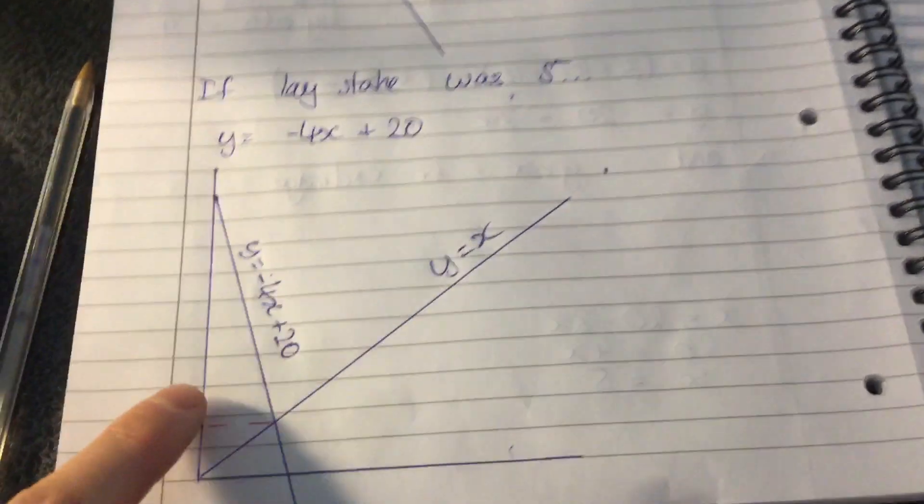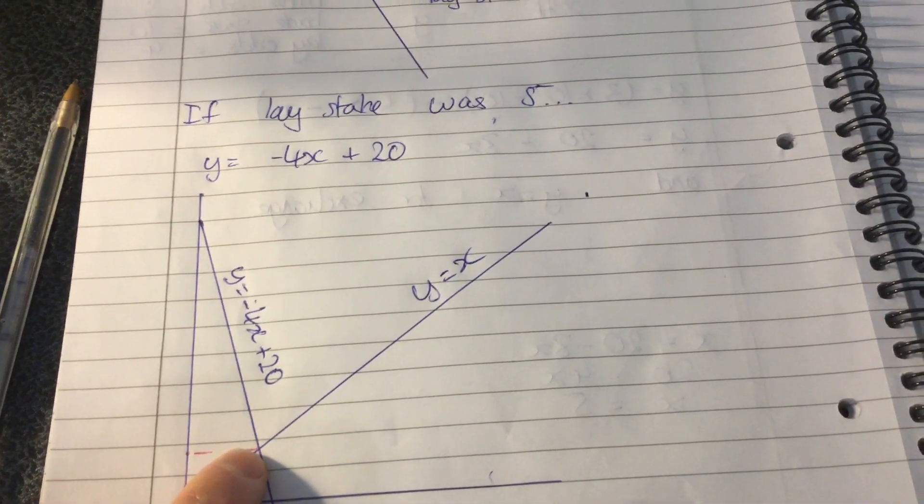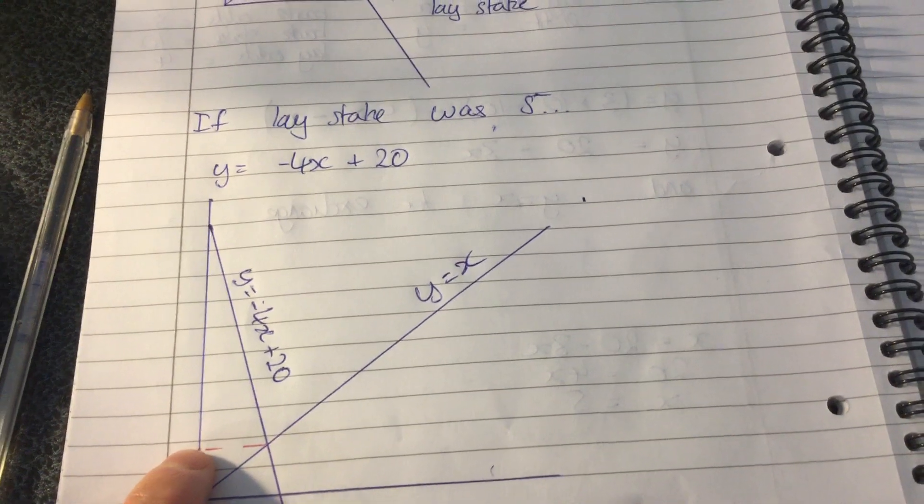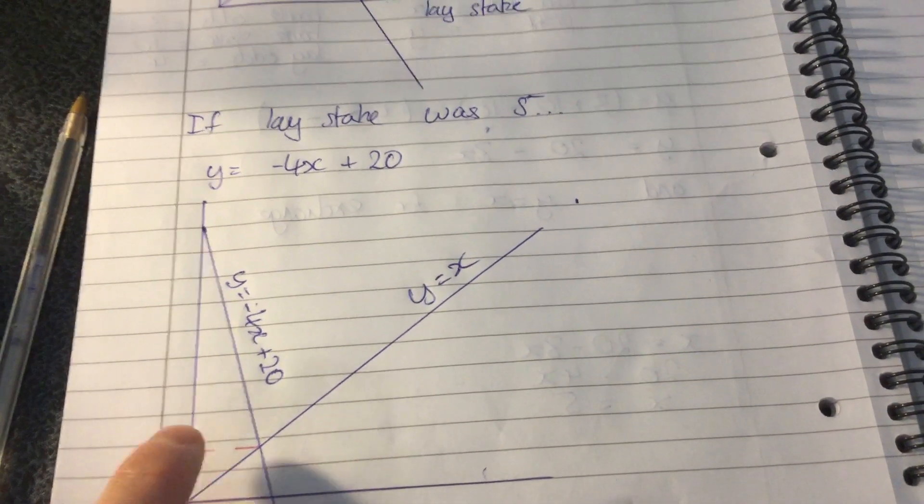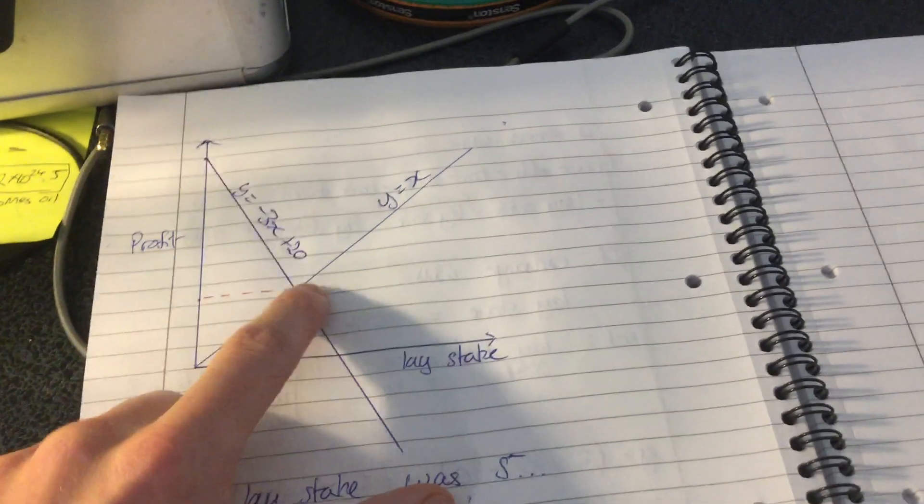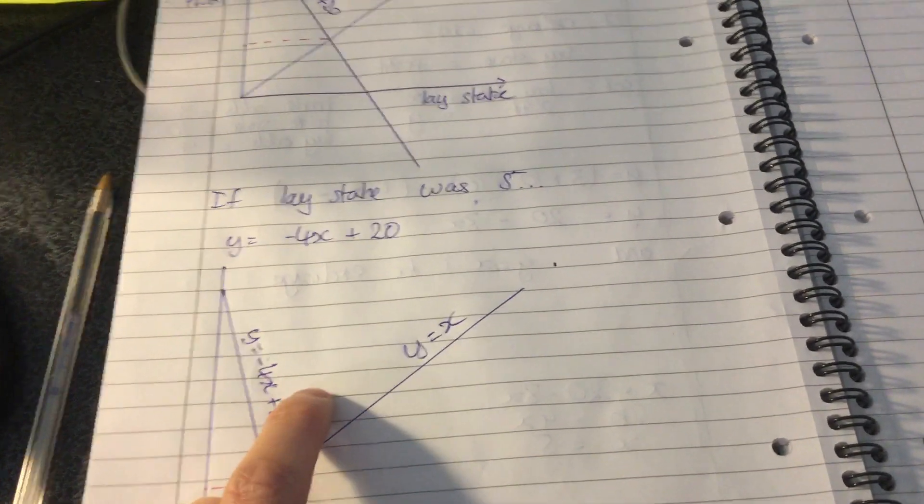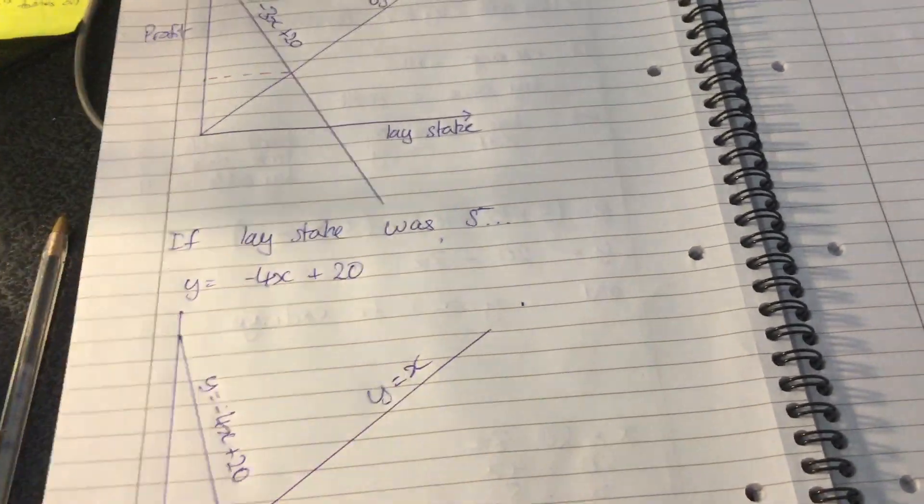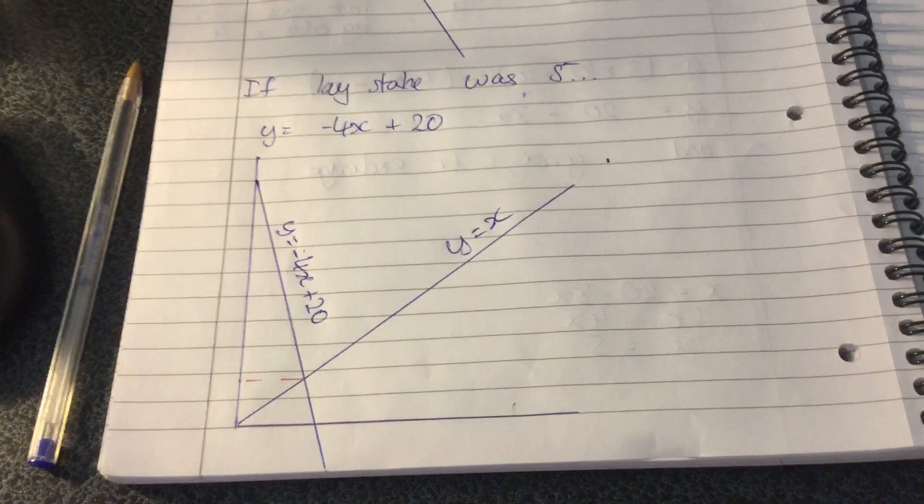So that means the intersection is going to be further down and therefore the profit is going to be reduced. So if you look at where that red line meets the y-axis, that's our profit for where the lines intersect, it's lower down than for this example. So here our lay odds were four and everything else kept the same as for this, apart from the lay odds were five so that the difference in the odds was bigger and therefore our profit was reduced.